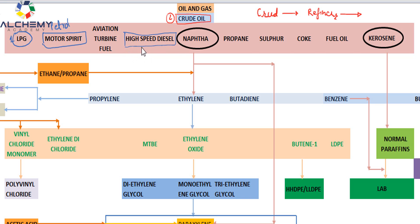Then comes naphtha, which is one of the major products from which we derive different types of petrochemical products. This is processed in the petrochemical complex. We also get petroleum coke from the refinery — this is petroleum coke, not natural coke. Other products we get directly from the refinery include propane, sulfur, fuel oil, and kerosene.